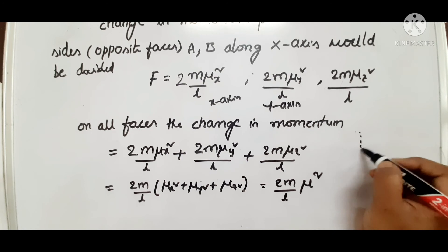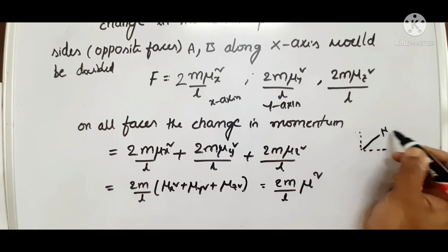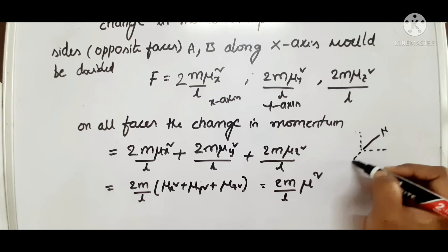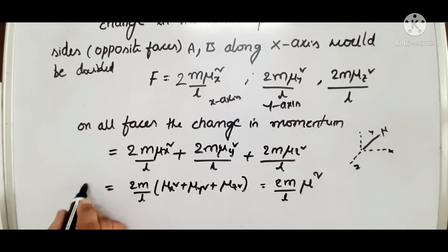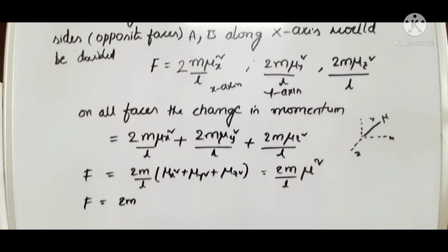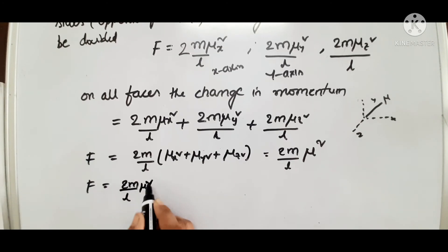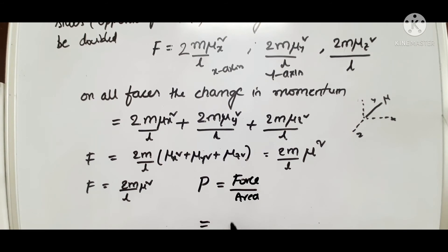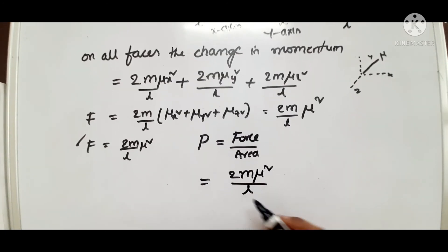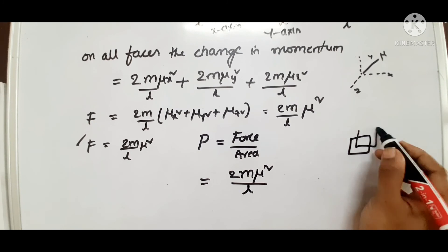If the velocity of a molecule is mu, with x, y, z as vector directions, then force equals 2M by L times mu squared. Pressure equals force by area. Force is 2M mu squared by L. You are considering a molecule in a cube of unit volume. The surface area of the cube will be 6L squared.